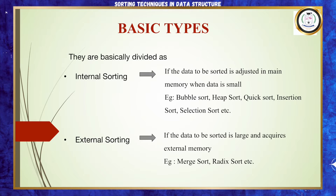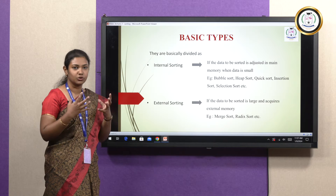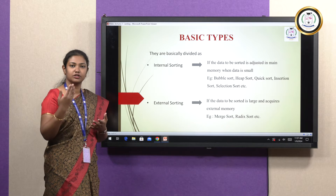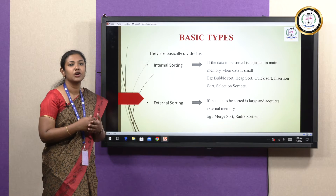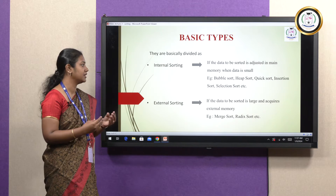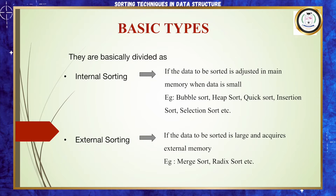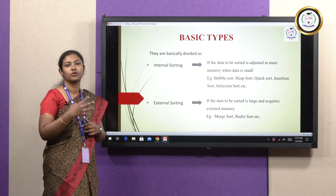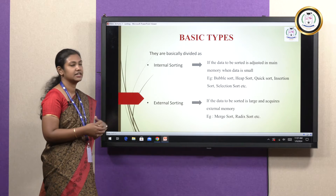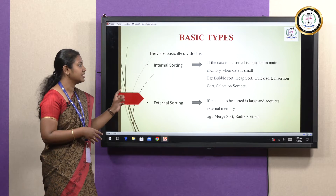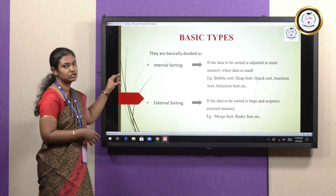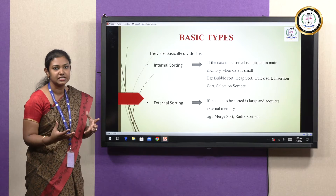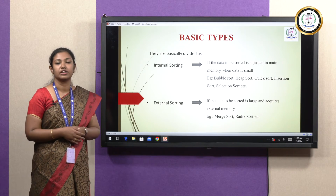Generally sorting is divided into internal sorting and external sorting. When we are having a group of elements, data can be held either in main memory or in external memory. Whenever we use main memory, we consider it as internal sorting. Whereas when we store it in external memory, we call it external sorting. Basically when the data is small, we use internal sorting, whereas when the data size is large, we use external sorting.